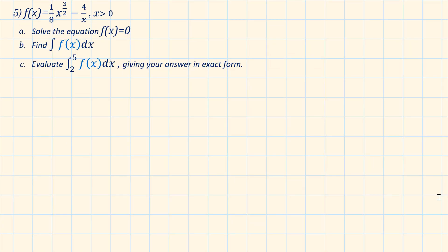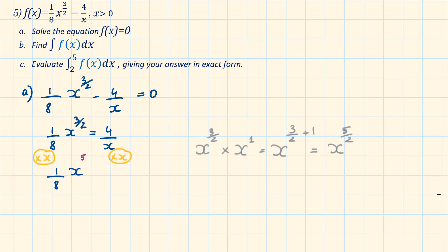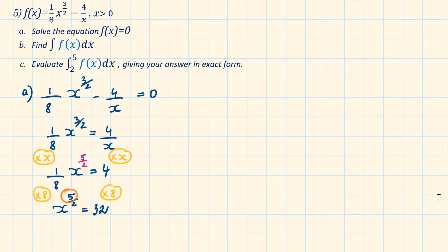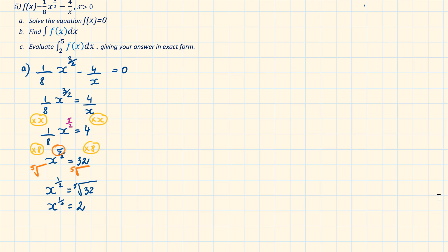Question 5 is similar to one of the more challenging questions in the textbook, but the result is slightly more complicated for extra challenge. Part A: solve the equation f(x) equals 0. To get rid of the x in the denominator, multiply both sides by x; to get rid of the 8 in the denominator, multiply both sides by 8; to get rid of the 5 in the numerator, take the fifth root. This gives x to the power of a half equals the fifth root of 32, which is 2. Since x to the power of a half is the square root of x, squaring both sides gives x equals 4.